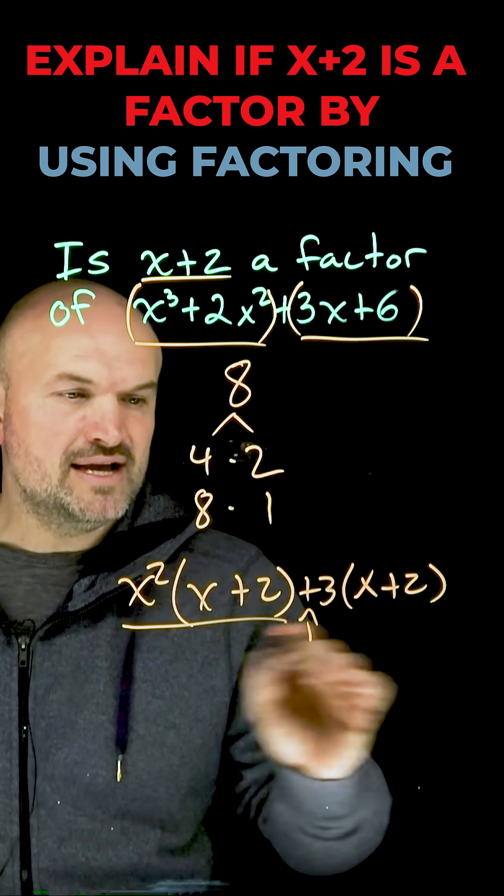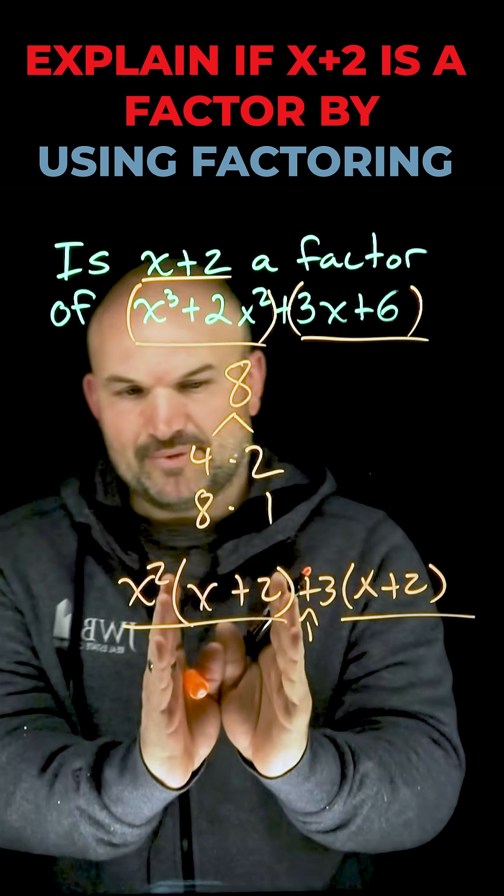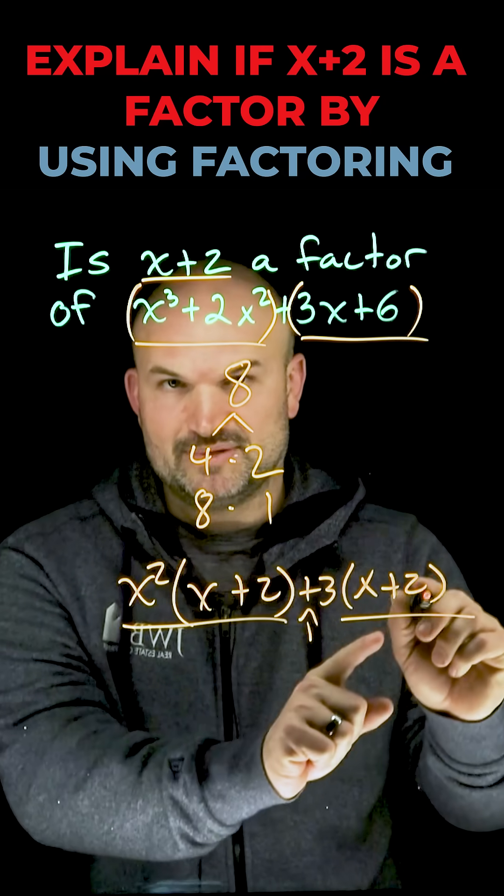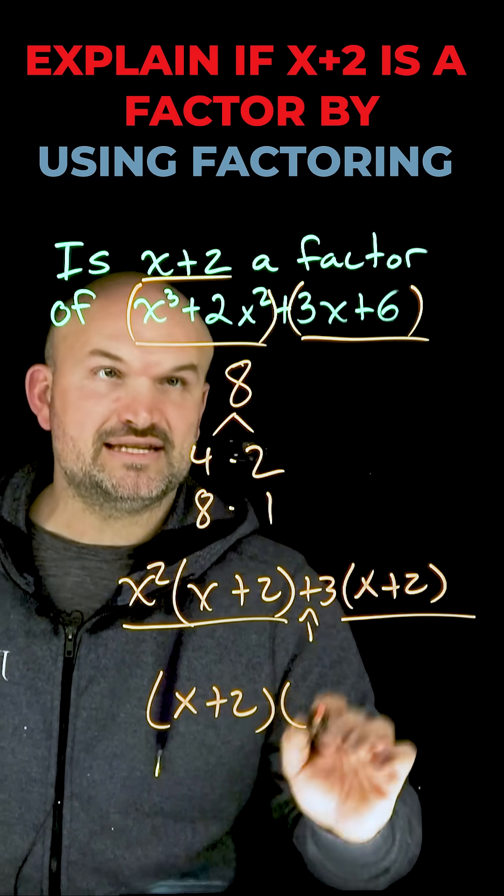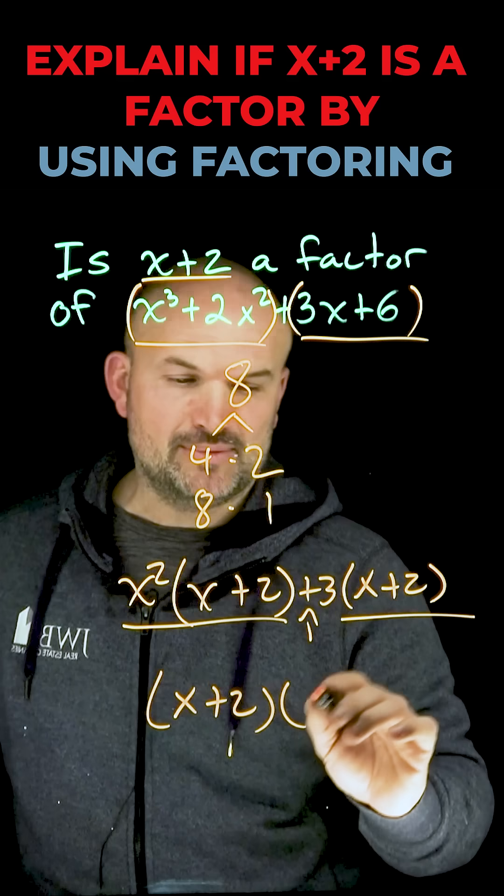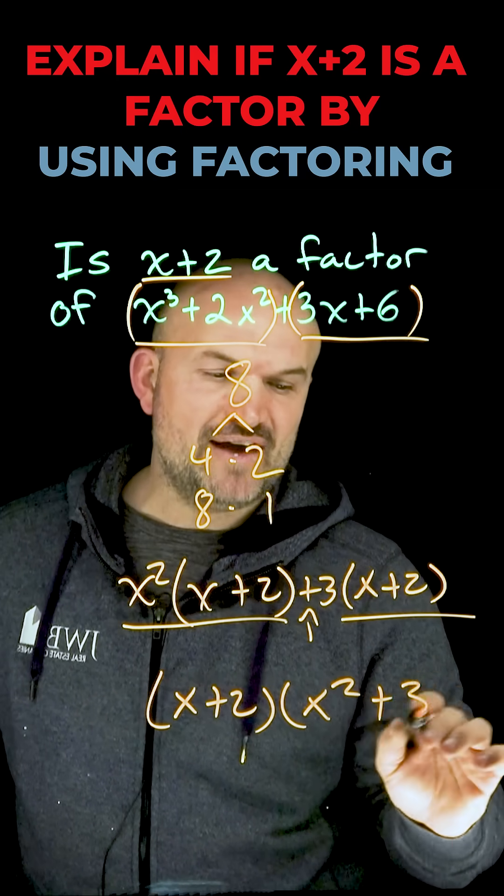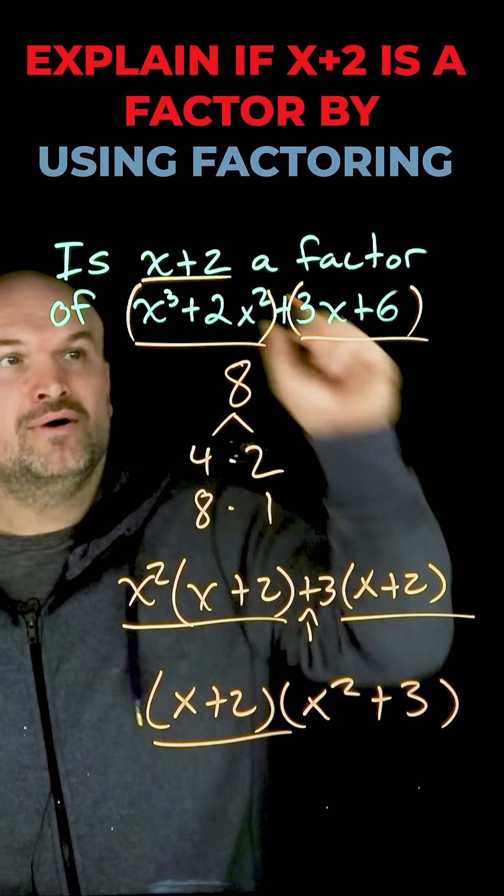Now you can see I have two terms separated by addition, and inside the parentheses I have x+2 and x+2. I can factor that out one more time, and now you can see I've rewritten this polynomial as a product of two factors. One being x+2, which was the question. It is a factor.